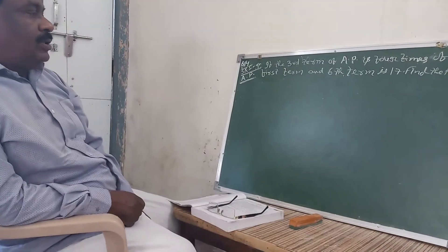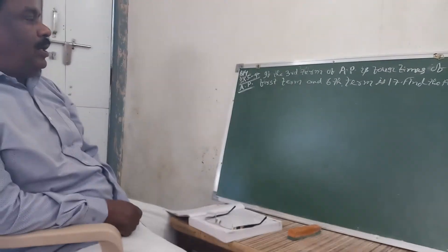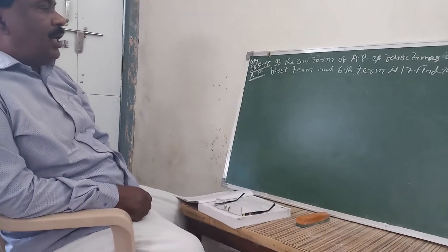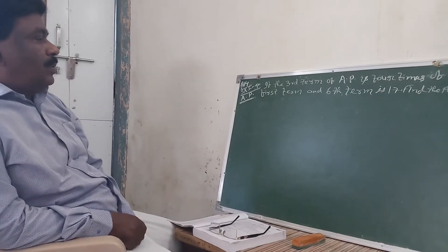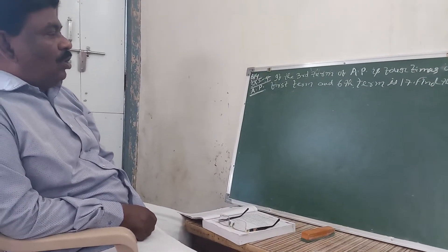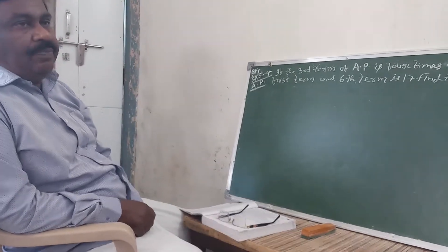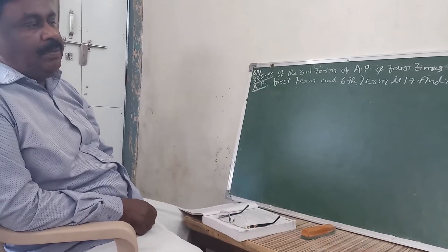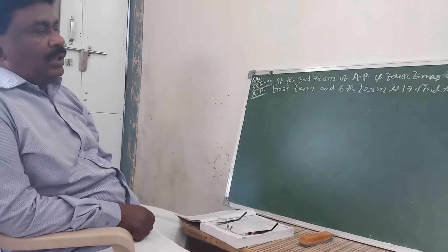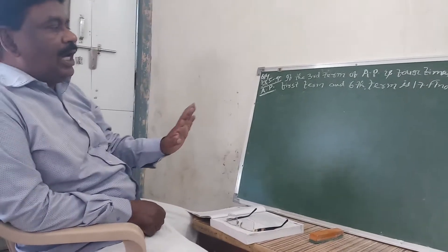If AP is the third term of the first term and the sixth term is 17, then we are going to use arithmetic progression. We are going to use the series in this question.